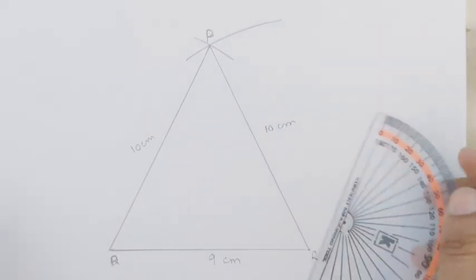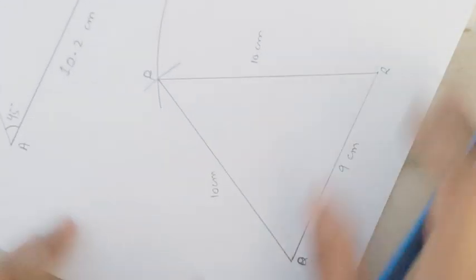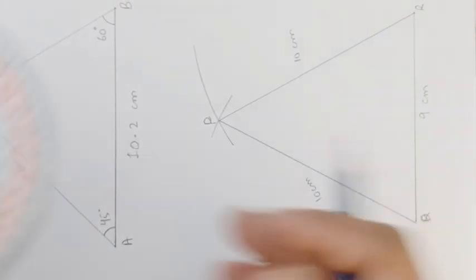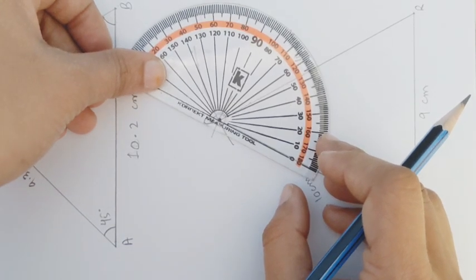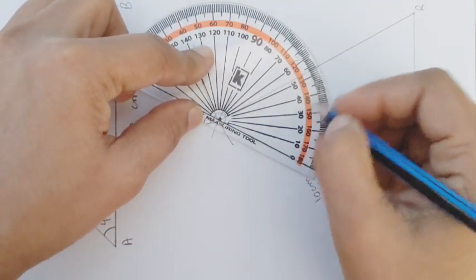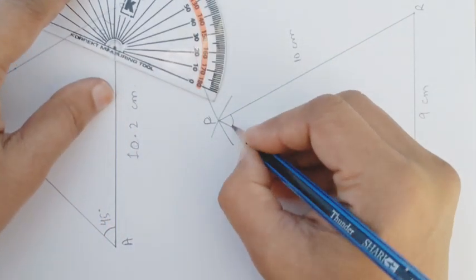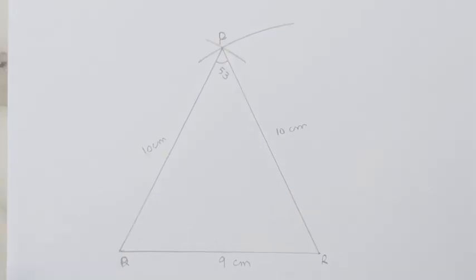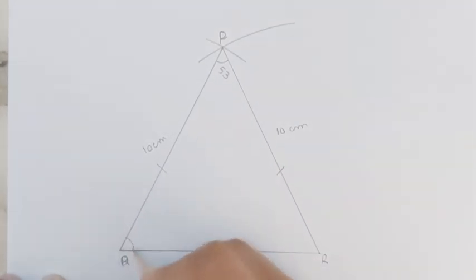The question also says measure and write down the size of angle QPR. We tilt the shape and measure this angle with center P. Starting from 0 — between 50 and 40 — it appears to be 53 degrees. Since it is an isosceles triangle, the two base angles are congruent, so the remaining two angles are 63.5 degrees each, as 180 − 53 = 127, and 127 ÷ 2 = 63.5 degrees.